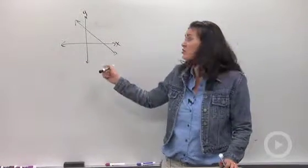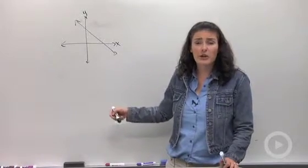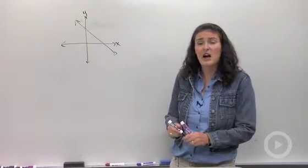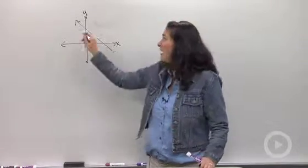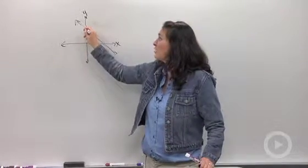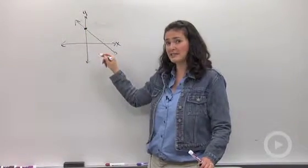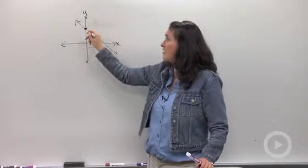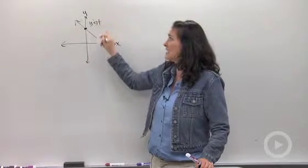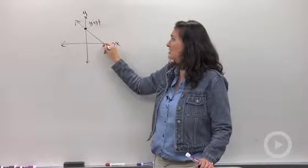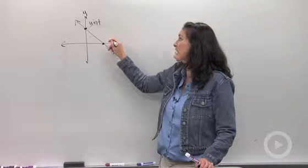What I have here is just a really rough graph — I just drew a line up there, there's no numbers or anything. But what I wanted to show you is that when you're looking at a graph, you can find the y-intercept by looking on the y-axis and seeing where your line crosses it. That's the y-intercept, and the x-intercept is where your graph crosses the x-axis.